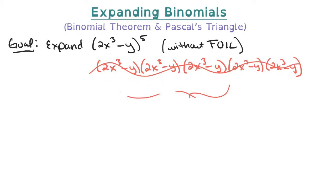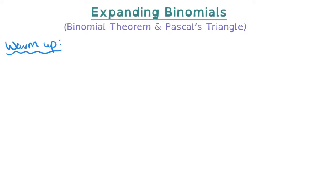The way we're going to avoid that is by using the binomial theorem. In order to work up to the binomial theorem, I want to expand some easier problems first. We're going to start expanding a plus b to the nth power and continually change what exponent we raise our binomial to.